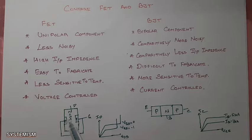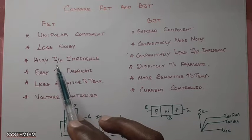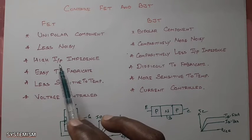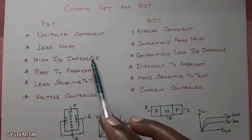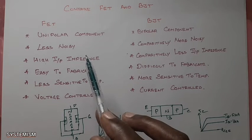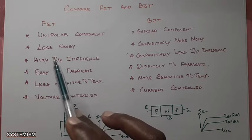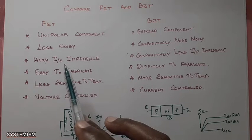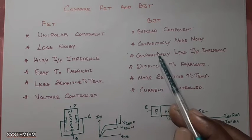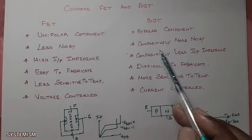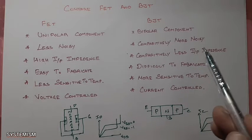Then FET is famous for its high input impedance. Because input impedance high means it is a good quality for a component, for a device. So this FET has more input impedance, it is a good quality. Comparatively with the FET, BJT has less input impedance.